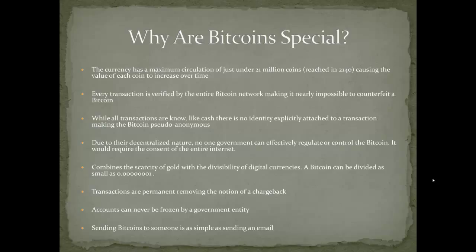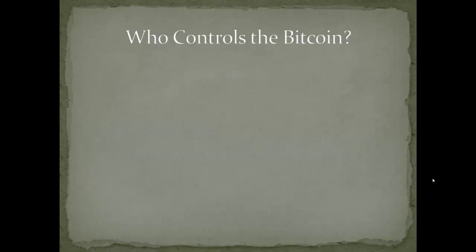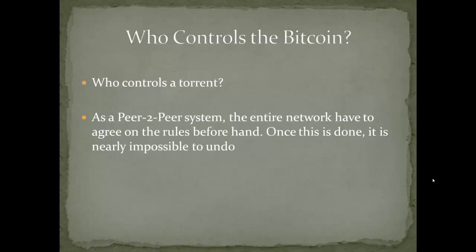So who controls this? It's difficult for people in the financial industry, much less the general public, to wrap their minds around a decentralized currency because the first question is always: who's behind it, who regulates it, who's in control? For the most part it's like asking who controls a torrent. There's the person who may upload the file to begin with, but once you have a torrent cloud and everybody's downloading the file, no one person controls it — it's a group of peers talking to each other. As a peer-to-peer system, the entire network has to agree on the rules beforehand, but once done, you can't undo it. Bitcoin is autonomous now.